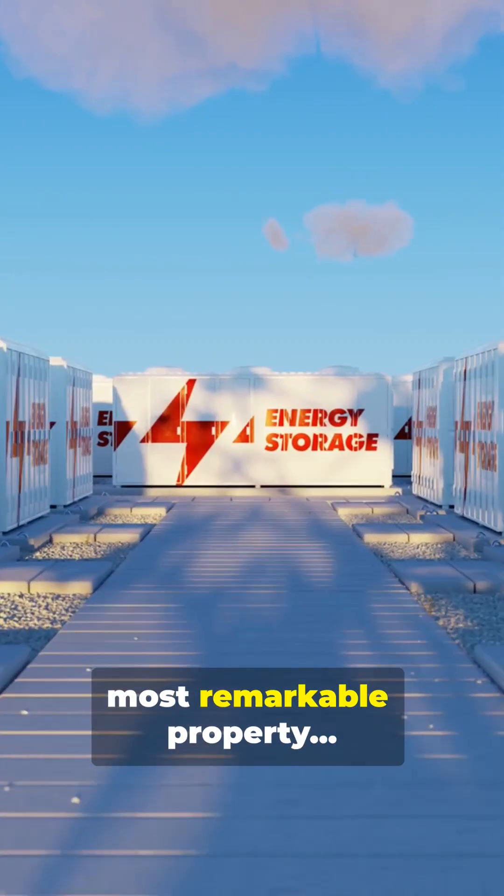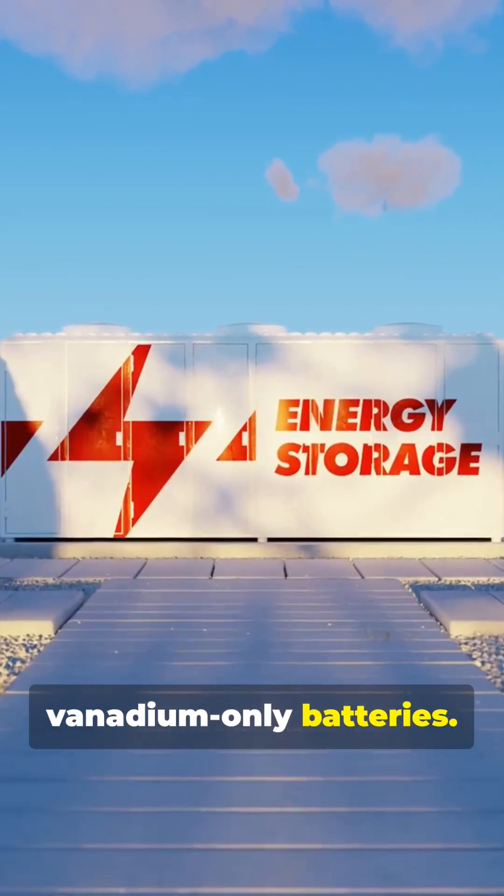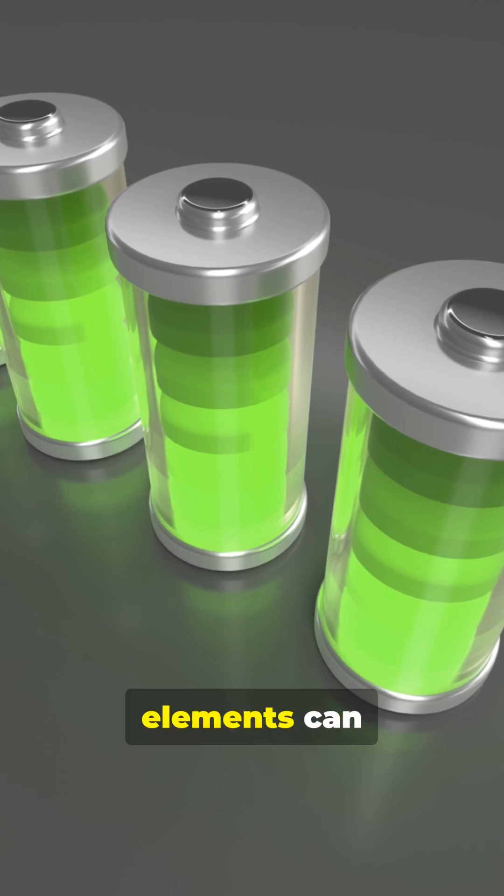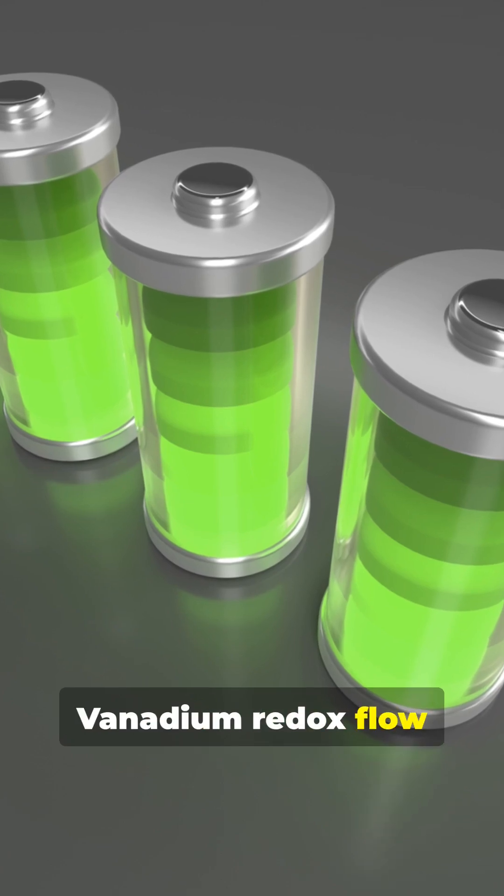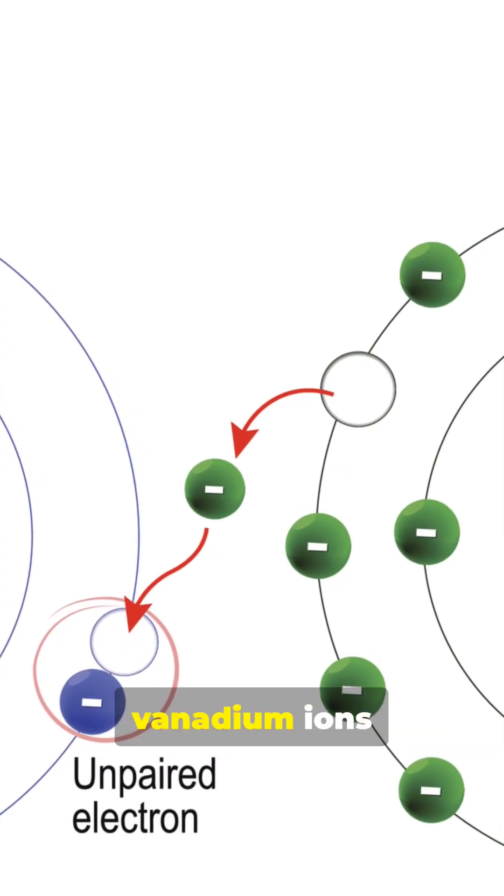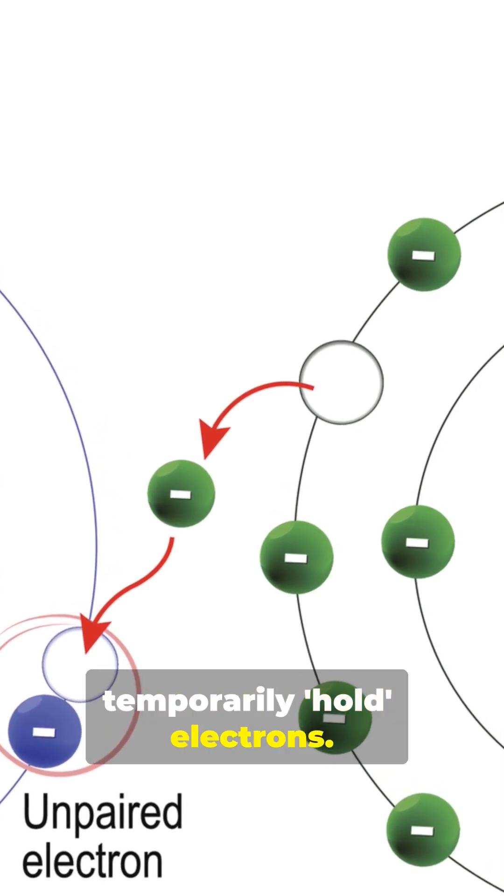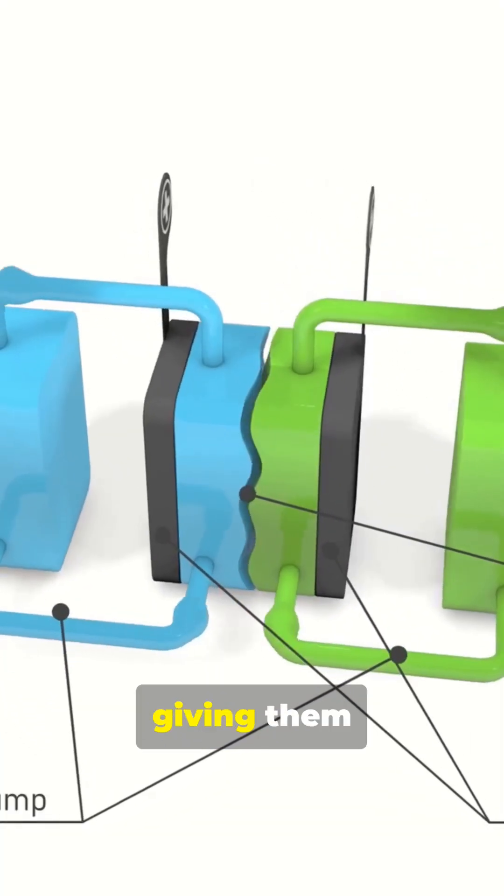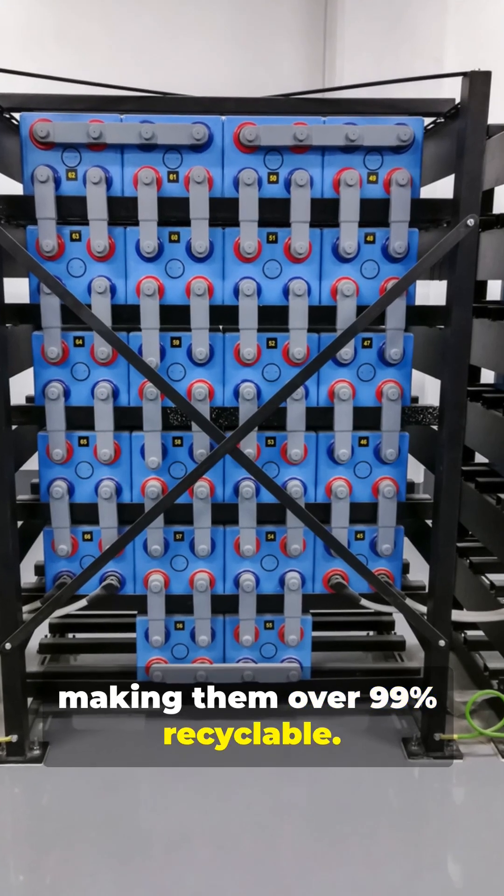And the third and most remarkable property. Vanadium can be used to make vanadium-only batteries. Most rechargeable batteries use several different elements to store power. Over time, those elements can contaminate each other, reducing battery life. Vanadium redox flow batteries use only one element – vanadium. Instead of degrading, vanadium ions simply switch between charged states as their empty orbitals temporarily hold electrons. This allows these batteries to be charged up to 20,000 times, giving them lifespans of 15 to 20 years, and making them over 99% recyclable.